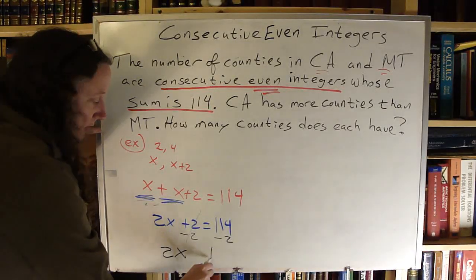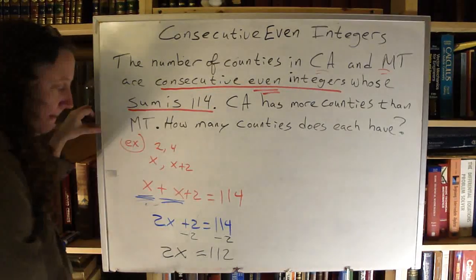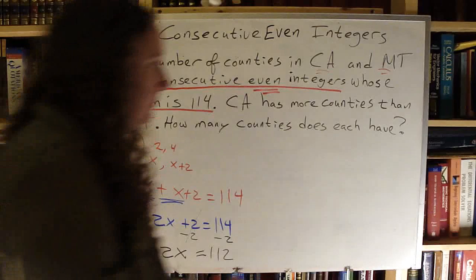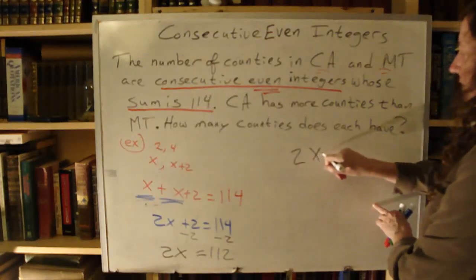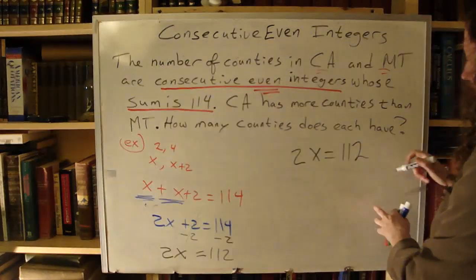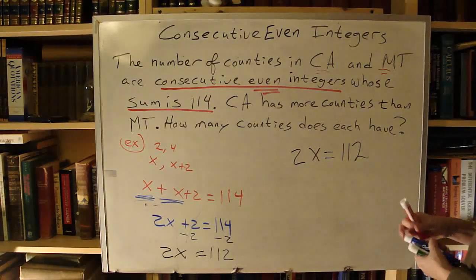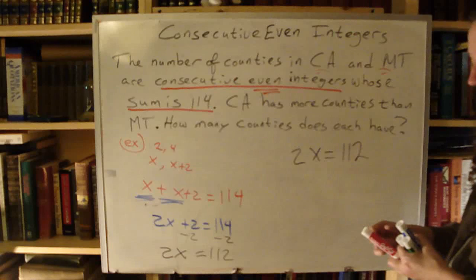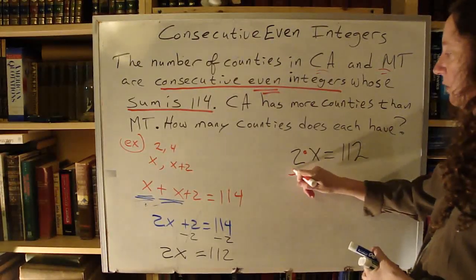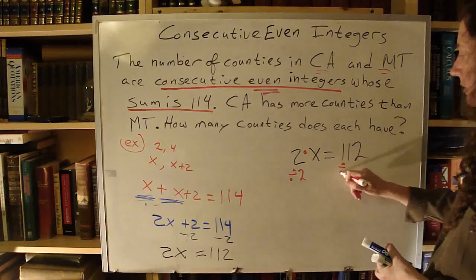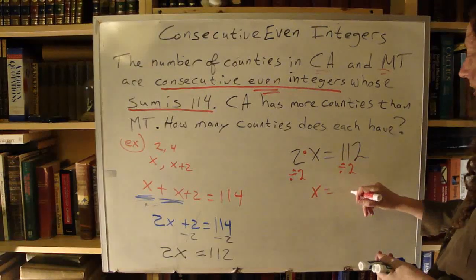On the other side I have 112, with the equal sign in between. So rewriting: 2x equals 112. I'm not done solving yet because x is not alone — it's being multiplied, so I need to divide by 2. So x equals 112 divided by 2.